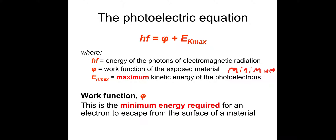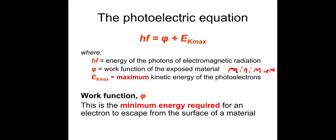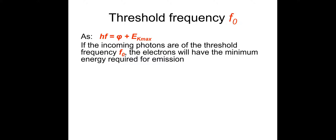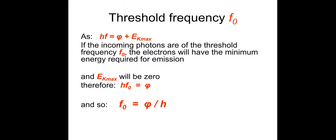The work function definition: the minimum energy required for an electron to escape from the surface of the material — you need to know that definition as you can be asked for it. Threshold frequency: using the equation HF equals work function plus kinetic energy, if the incoming photons are at the threshold frequency the electrons will have zero kinetic energy. So the equation becomes HF equals the work function. To get the threshold frequency we divide by Planck's constant, so the threshold frequency equals the work function divided by Planck's constant.